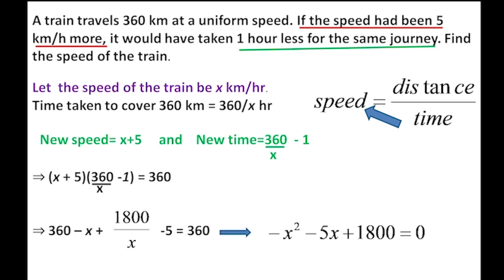Let's open and simplify. We get 360 minus x minus 1800/x minus 5 equals 360, which becomes minus x squared minus 5x plus 1800 equals 0. Dividing by negative 1, we get x squared plus 5x minus 1800 equals 0.